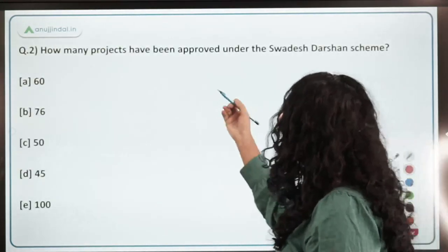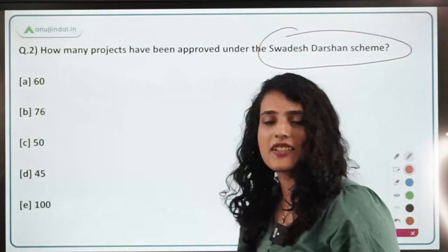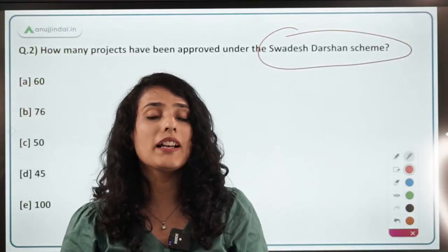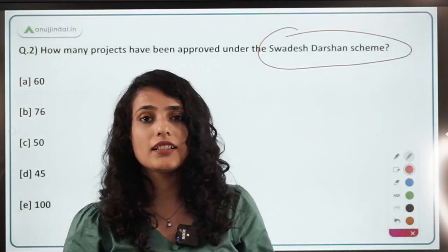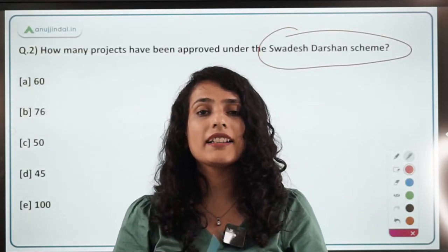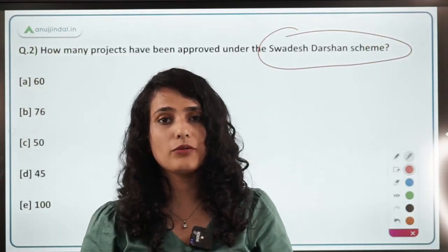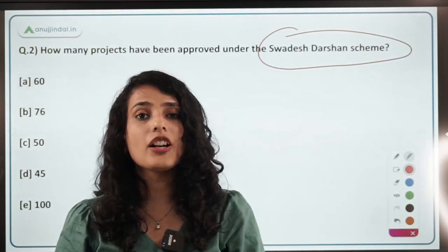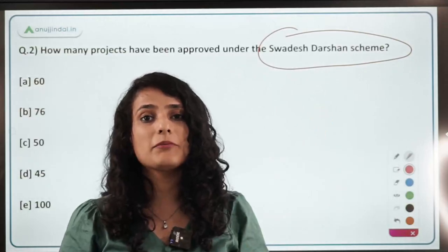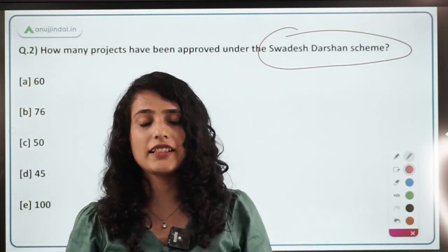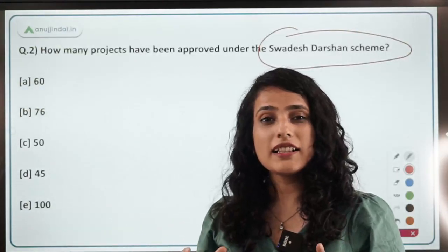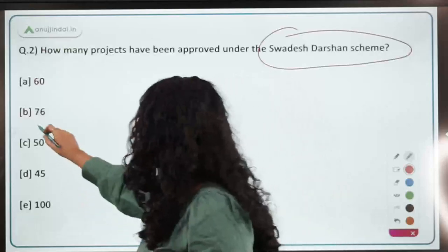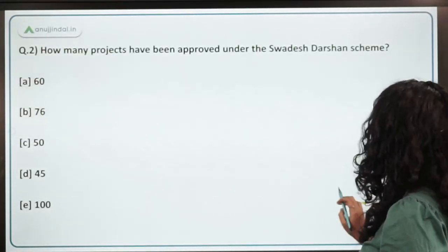The next question: how many projects have been approved under Svadesh Darshan? Svadesh Darshan is a very important scheme under the Ministry of Tourism. Along with other schemes like Prasad, Dekho Apna Desh, these are very important tourist circuits being developed by the government to encourage citizens to know their country more. Svadesh Darshan includes the Ramayana Circuit, Krishna Circuit, Buddhist Circuit, Desert Circuit, Tribal Circuit, and others. The correct answer is 76 projects have been approved under the Svadesh Darshan scheme.